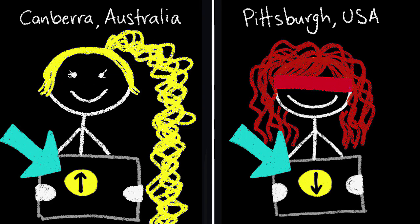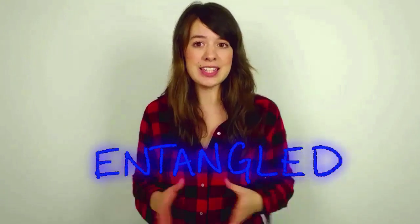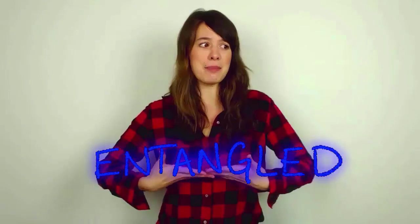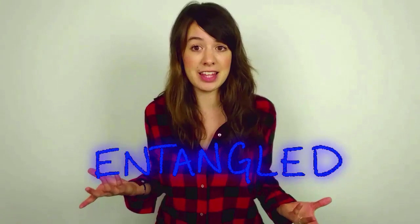As soon as one of us looks into our box, our particle collapses into spin up or spin down. But the crazy thing is, at the exact same time, the other particle on the other side of the world collapses into the opposite state. This happens instantaneously — there was no time or means for one particle to communicate to the other. These particles are said to be entangled as they seem to somehow magically know the state of the other.